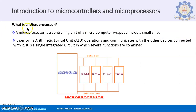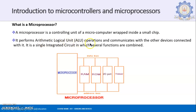So what is a microprocessor? It is a controlling unit — a microprocessor to be more precise is a controlling unit of a microcomputer, wrapped inside a small chip. This small chip can perform the operations of an ALU — arithmetic logical operations — it communicates with other devices connected to it, and it is a single IC in which several functions are combined together.